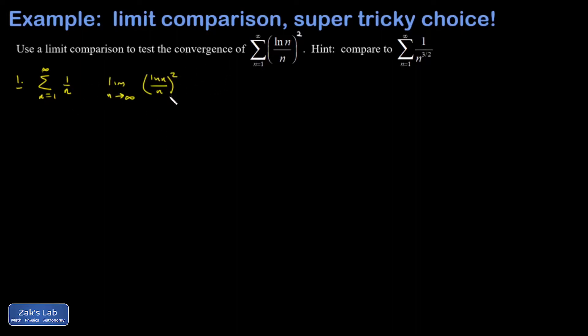Okay, so those are the terms of the series that we're working on. And then we divide by the terms of the series we're limit comparing to. That's the same as multiplying by the reciprocal.